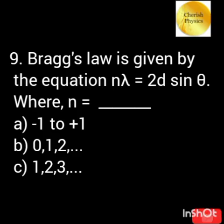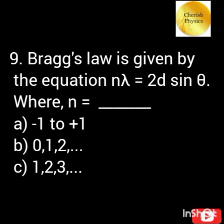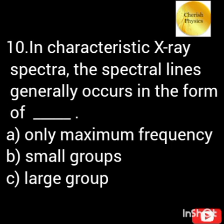What is the distance between the scattering planes in a crystal? Bragg's law is given by the equation n lambda = 2d sin theta, where n equals the order of diffraction. In characteristic X-ray spectra, the spectral lines generally occur in the form of doublets or groups.